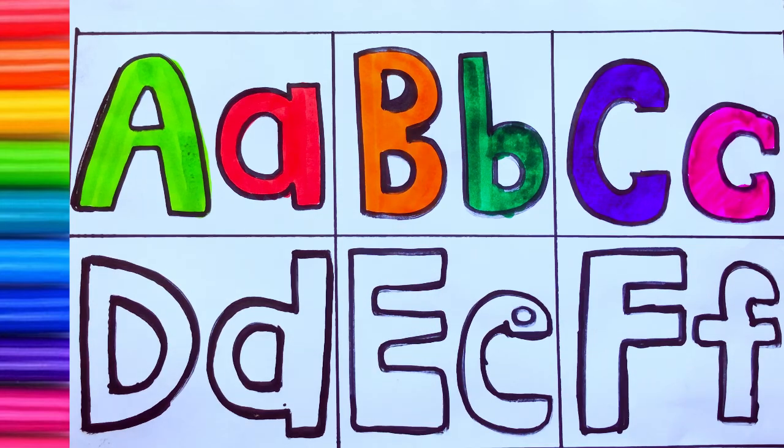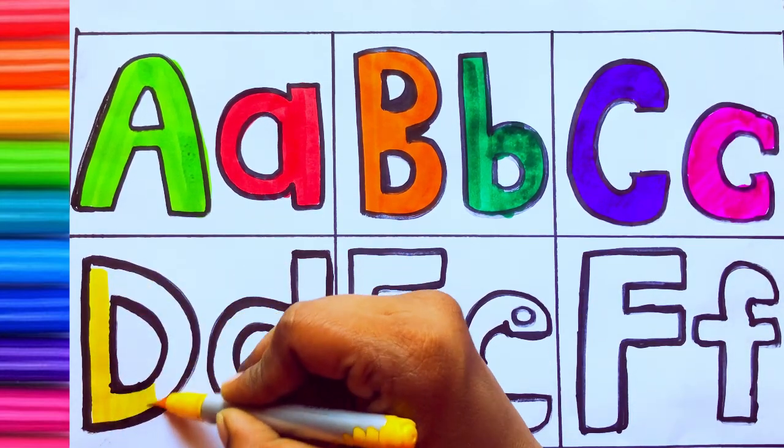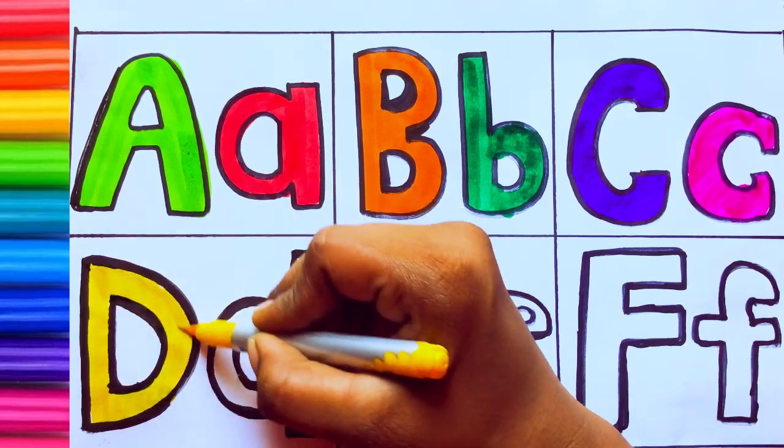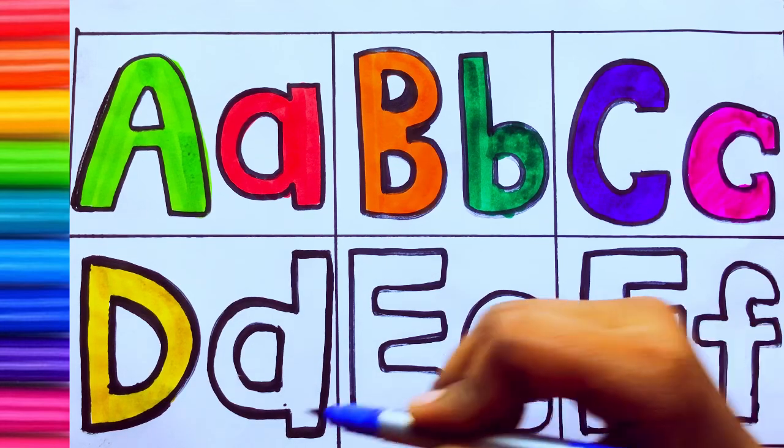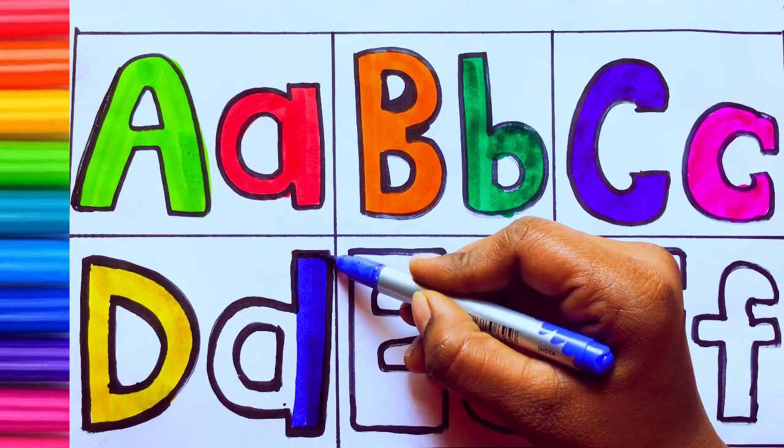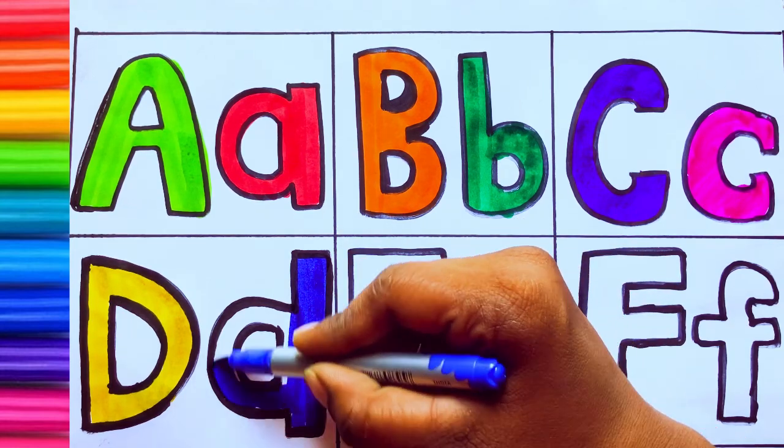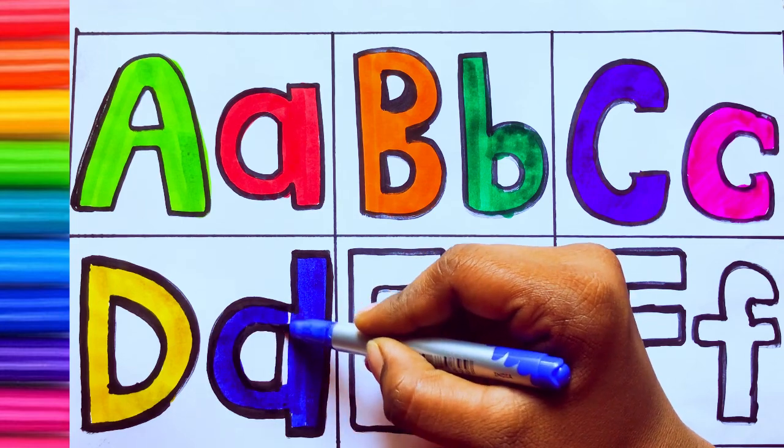Yellow color, D. D for dog, D-O-G, dog. D-O-G, dog. Blue color, small d. D for doll, D-O-L-L, doll.